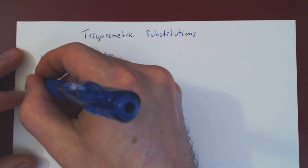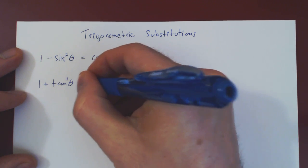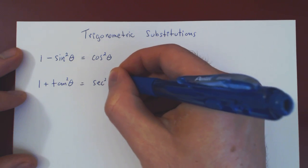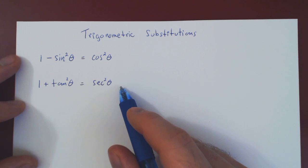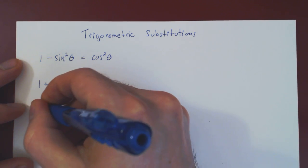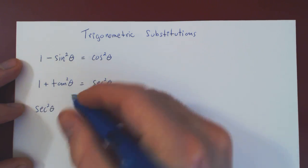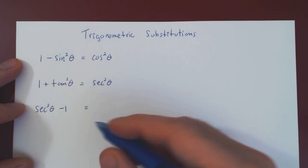Another one that you should know is one plus tangent squared of theta equals secant squared of theta. And here, if you subtract one on both sides and write secant squared minus one first, you get that secant squared of theta minus one will equal tangent squared.